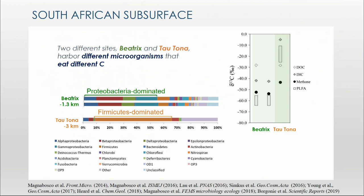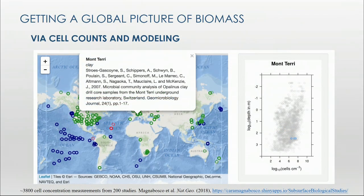We've done many studies to think about these patterns — who's there, what is active — through metagenomics, RNA-seq, metabolomics, and proteomics, and also thinking about how small fluctuations in electron acceptor availability influence community composition over time. The big question we've been pursuing is: are these controls of chemistry and microbial diversity really tied to each other globally? That set about a really integrated effort to estimate the controls of biomass and biodiversity in the continental subsurface.